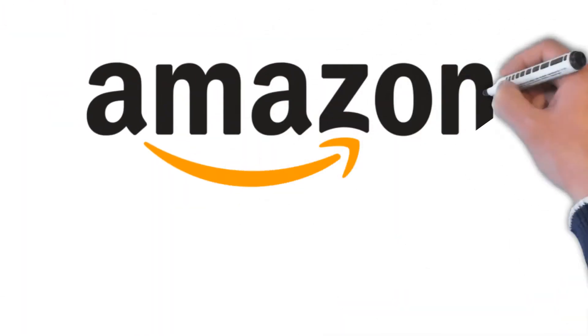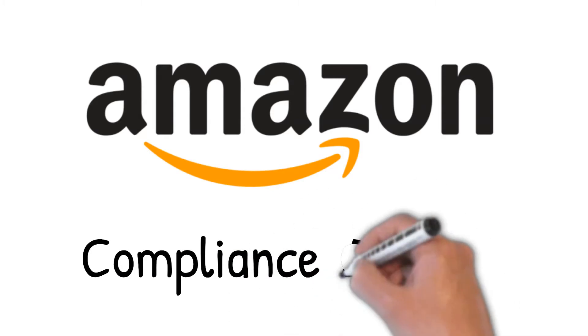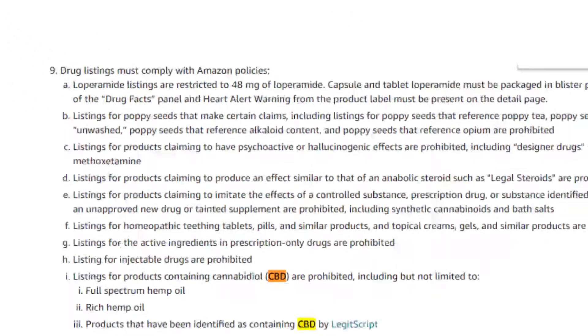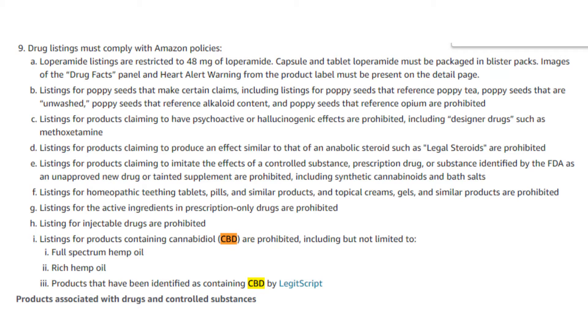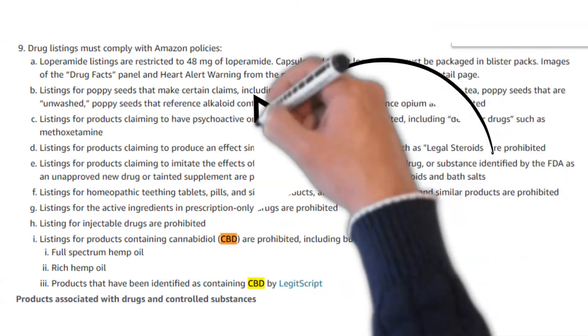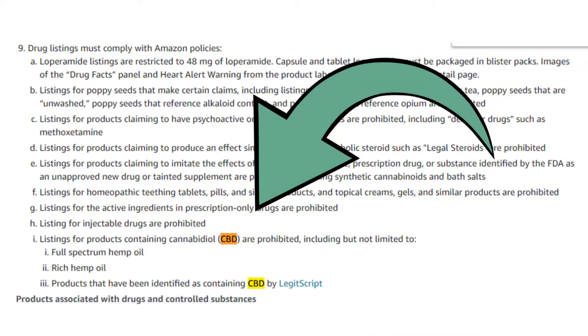Let's check out Amazon's compliance checklist, which explicitly states listings for products containing cannabidiol are prohibited, including but not limited to full-spectrum hemp oil, rich hemp oil, and products that have been identified as containing CBD by LegitScript.